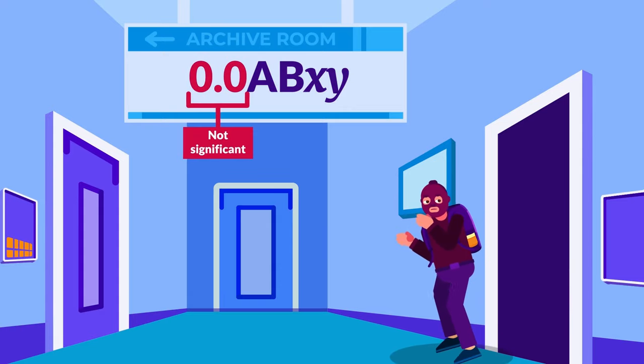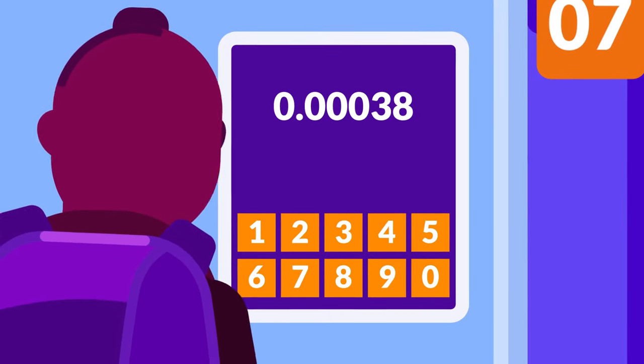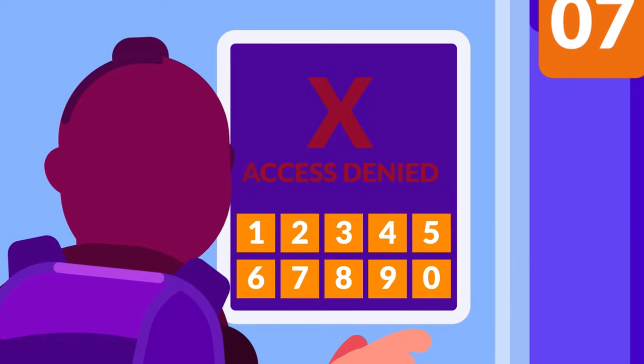Leading zeros, the zeros that appear before non-zero digits, are not significant. So, in 0.00038, the significant figures are 2.